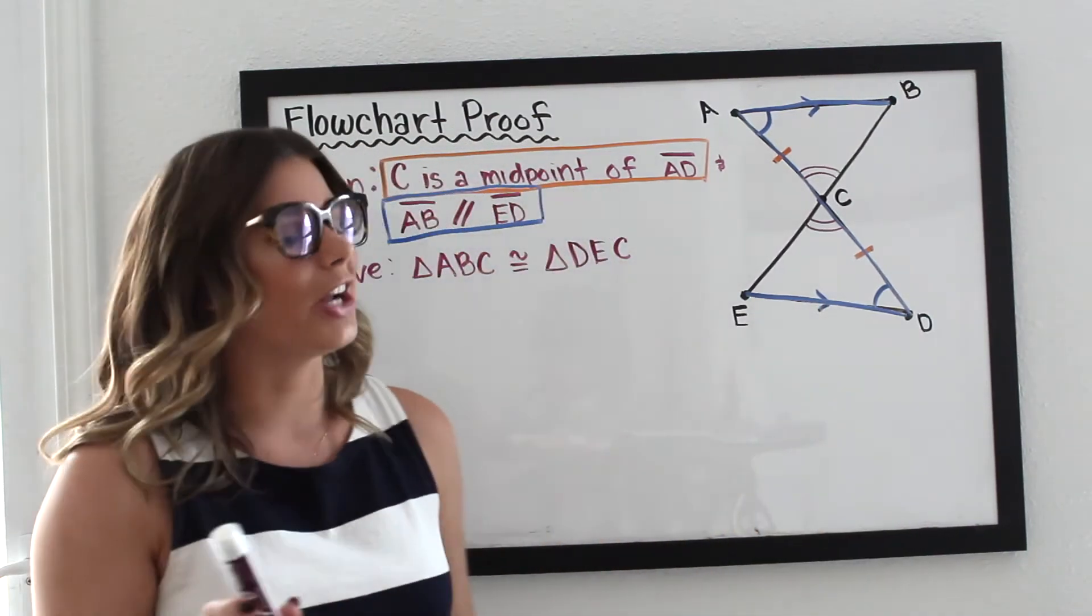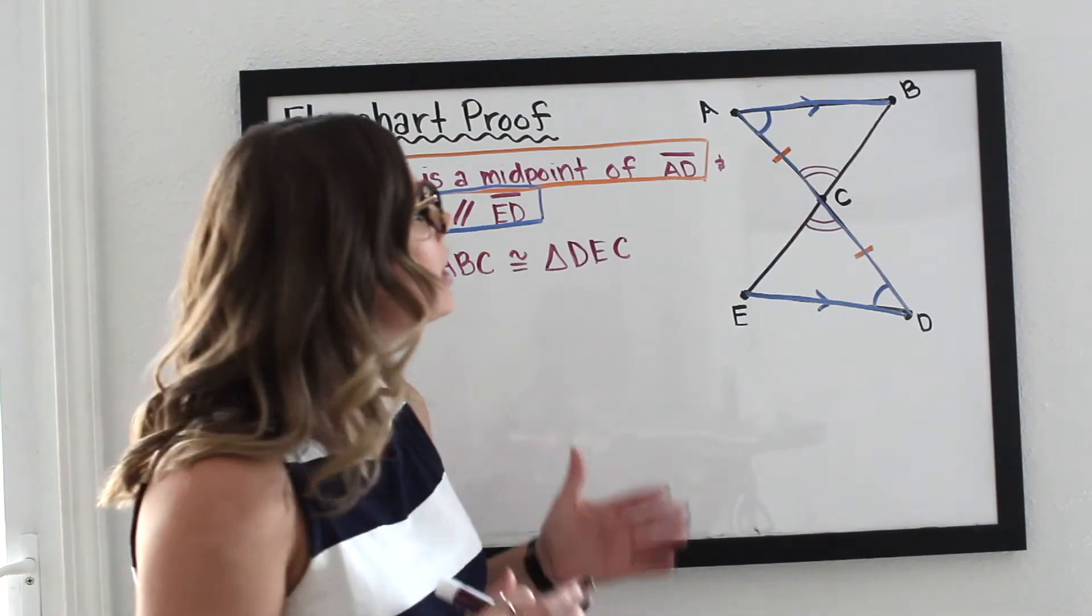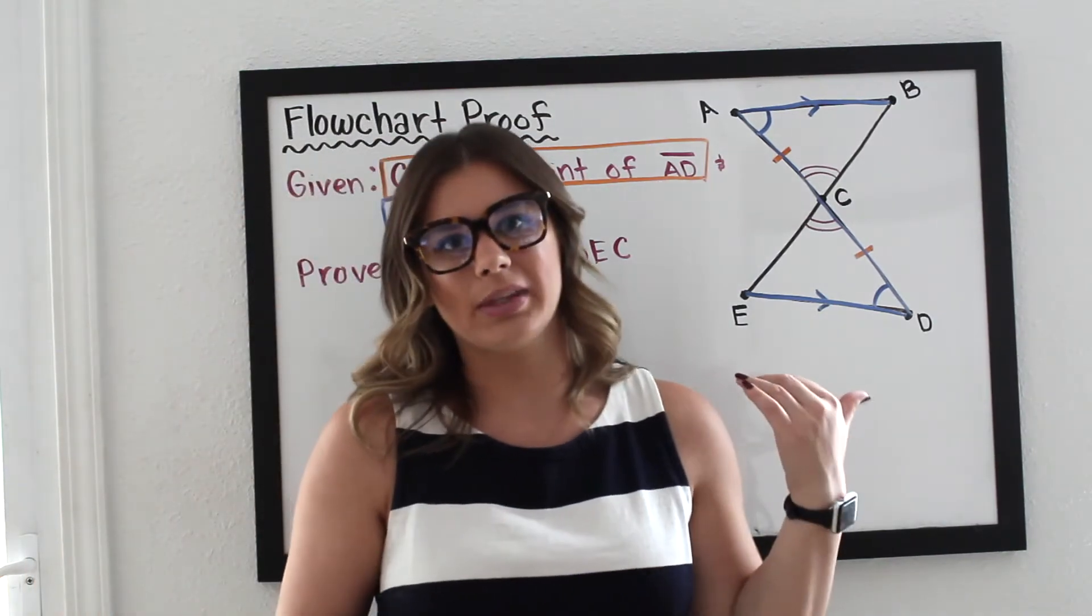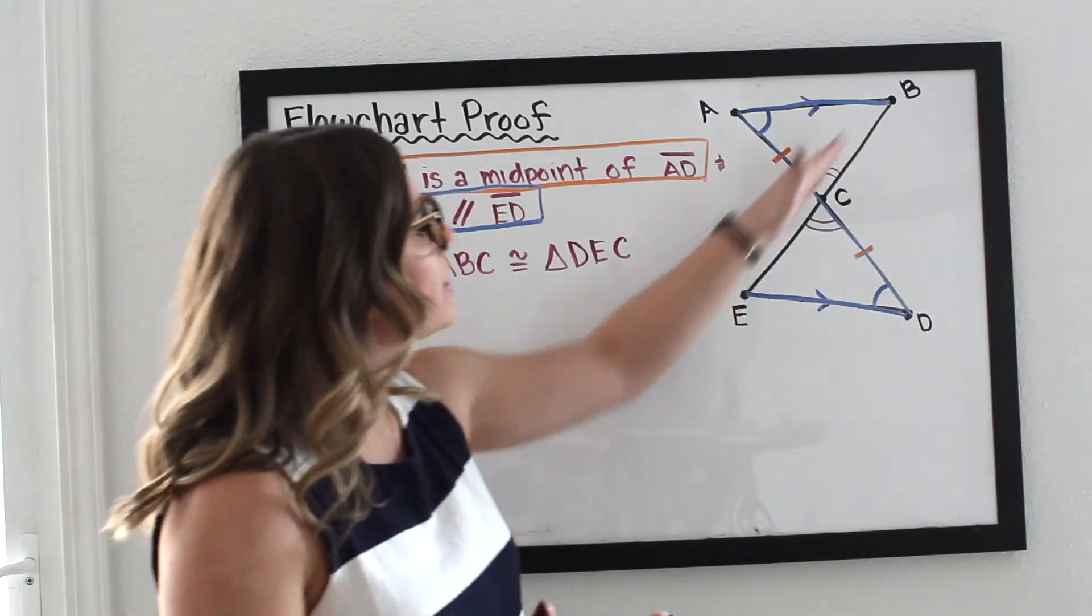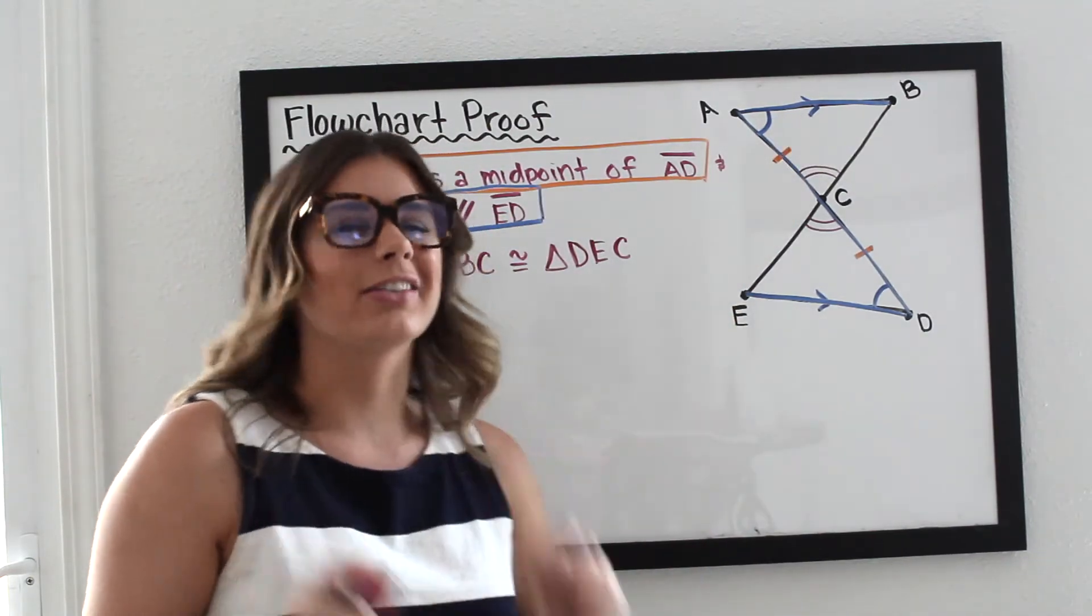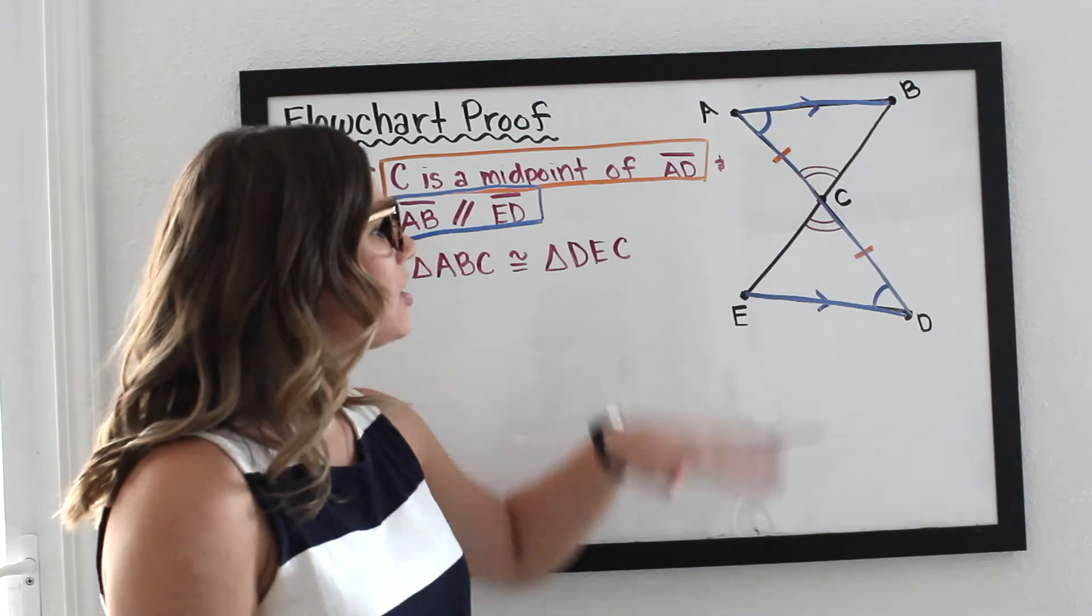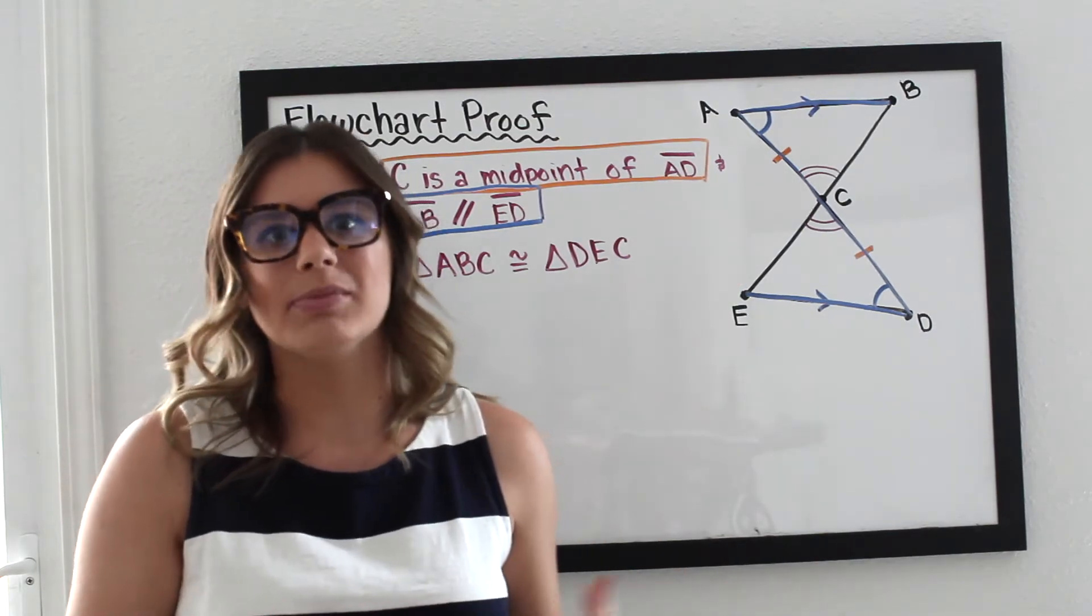There is also a way, and I challenge you to think about how to do this. There's also a way to do this one with angle, angle, side. You'd have to use this other transversal over here, just a little hint. But I'm going to do it to where we're going to use multiple theorems for the same proof.